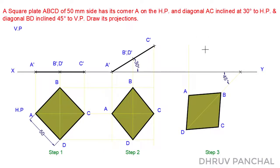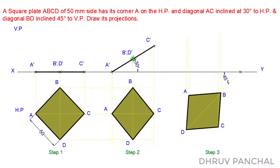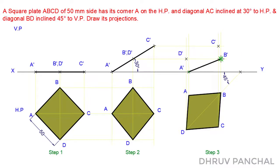To draw the front view in Step 3, with the help of a roller scale, take the projections of each point of the top view of Step 3 in the upper direction. Similarly, take the projections of each point of the front view of Step 2 in the right direction, and locate points A dash, B dash, C dash, and D dash. Then, with the help of a roller scale, draw a line passing through all the corner points as shown.